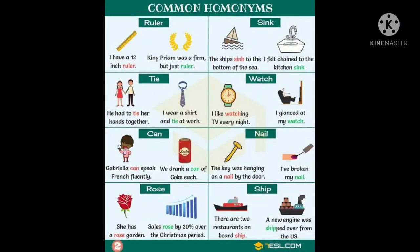So first we are going to see homonyms. Homonyms are spelled the same way but differ in meaning. Look at this picture children. Look at the first word — ruler. Ruler can be used in two different ways. The same word can be understood with different meanings in different contexts. For example: I have a 12-inch ruler. King Prem was a firm but just ruler.